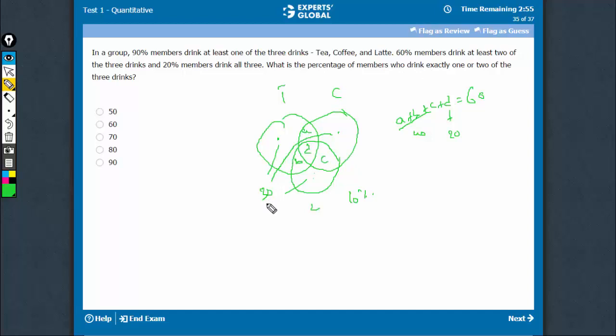Exactly one is 30, and exactly two is A plus B plus C, which is 40. So 30 plus 40, the answer is 70.